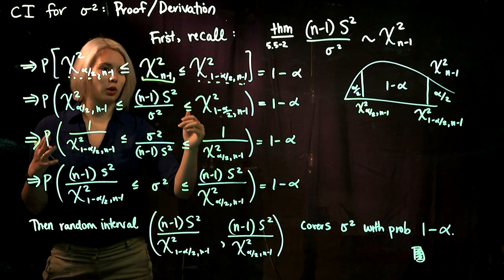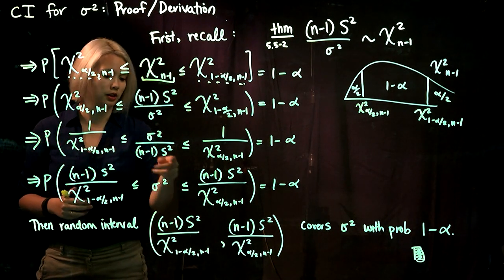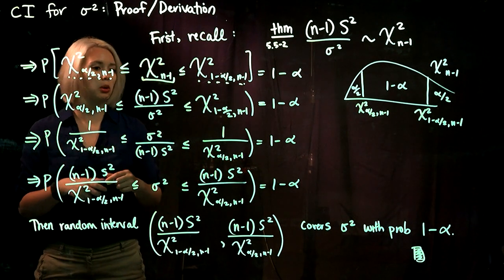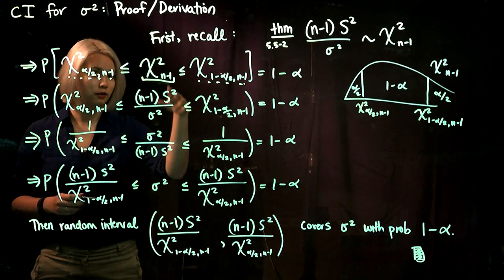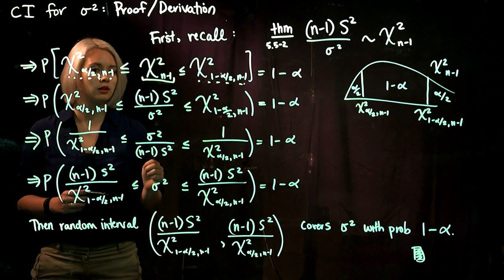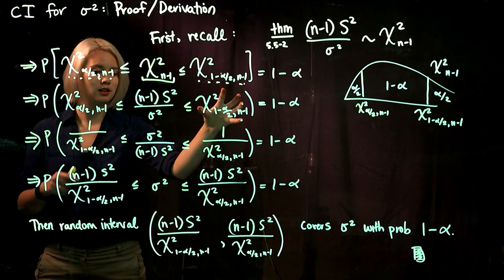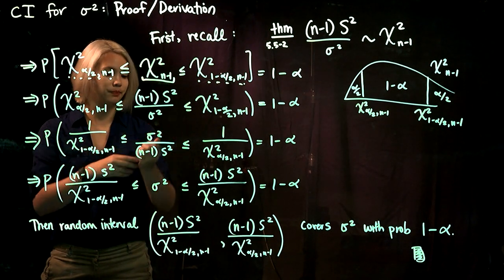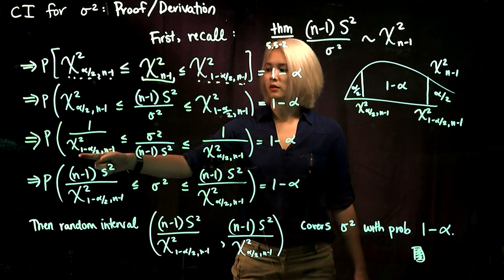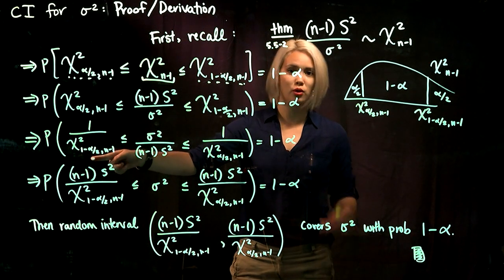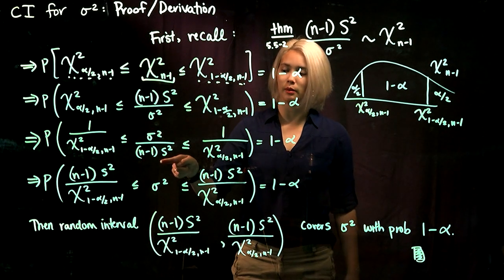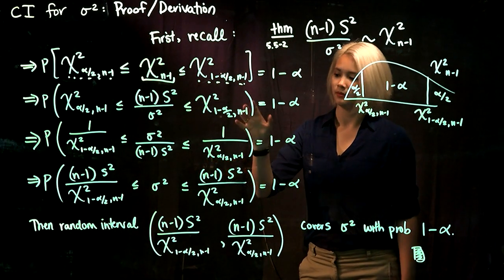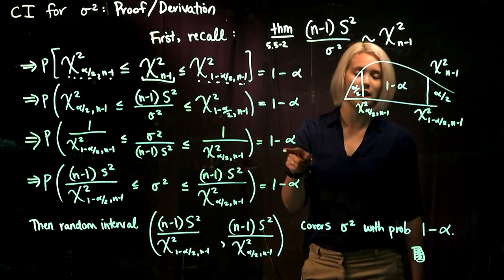We're trying to rearrange everything so that we end up with our parameter sigma-squared in the middle and everything else on the two endpoints. Since sigma-squared is in the denominator, we need to invert everything — divide all terms by 1. So this quantile comes here, this quantile comes here, and the middle is inverted as well. We have 1 divided by the chi-squared quantile with 1 minus alpha over 2 below it, then sigma-squared over n minus 1 times s-squared, and 1 divided by the chi-squared quantile with alpha over 2 below it. Inverting does not change the probability, so we still have probability 1 minus alpha.